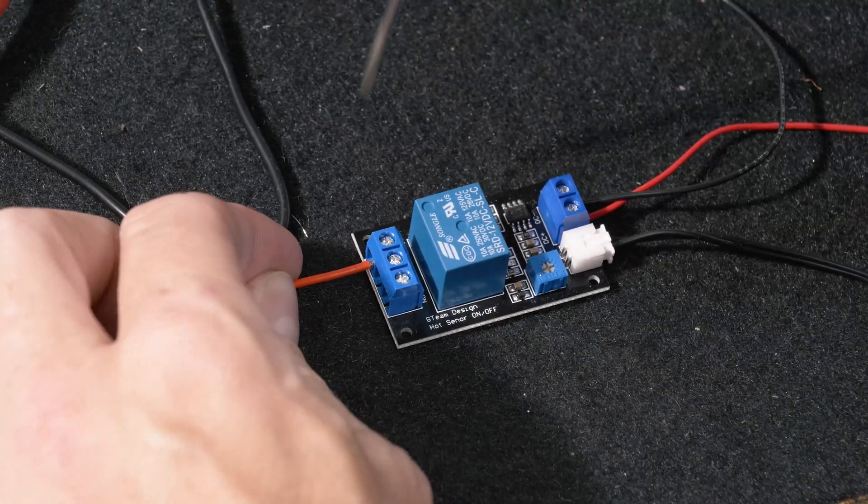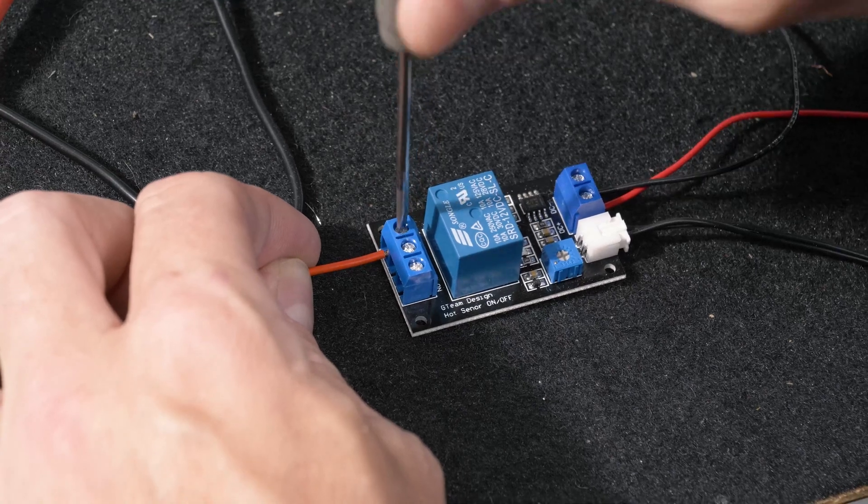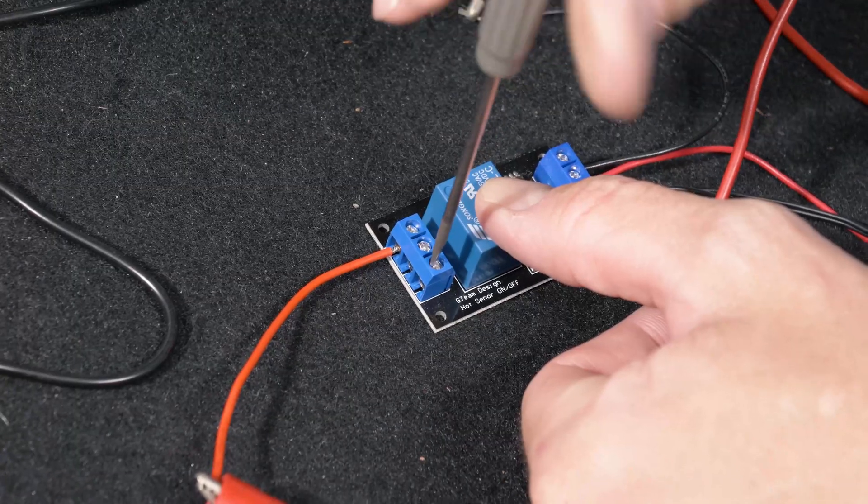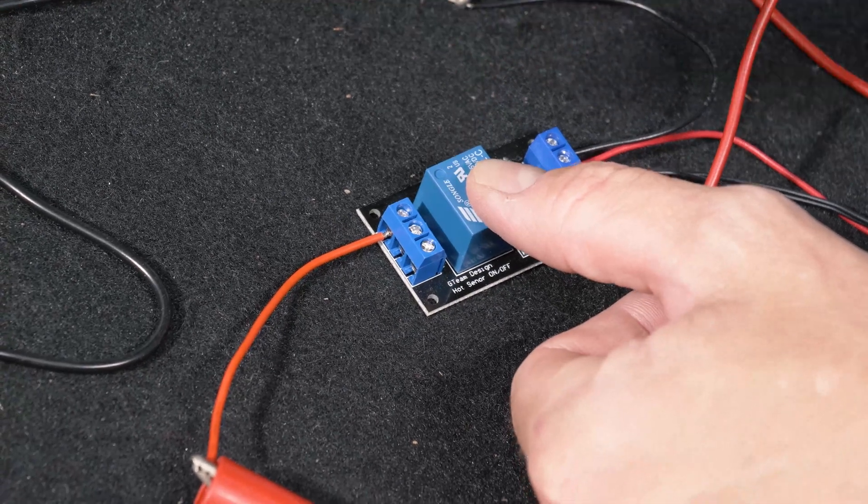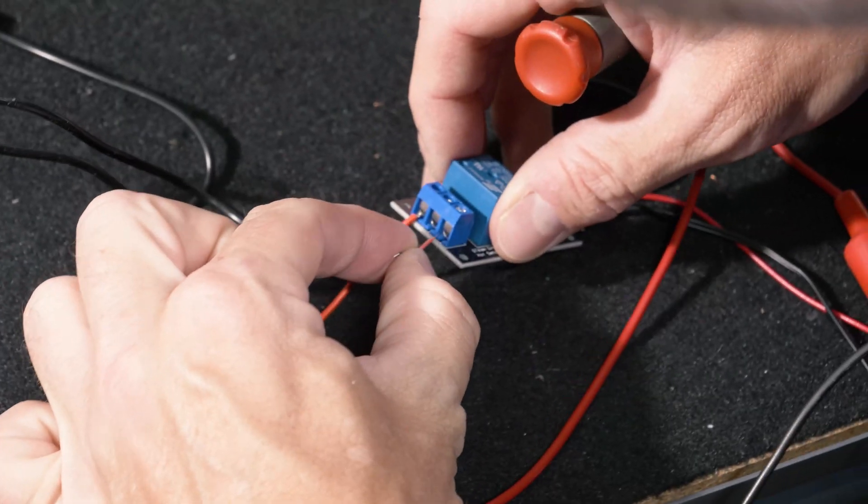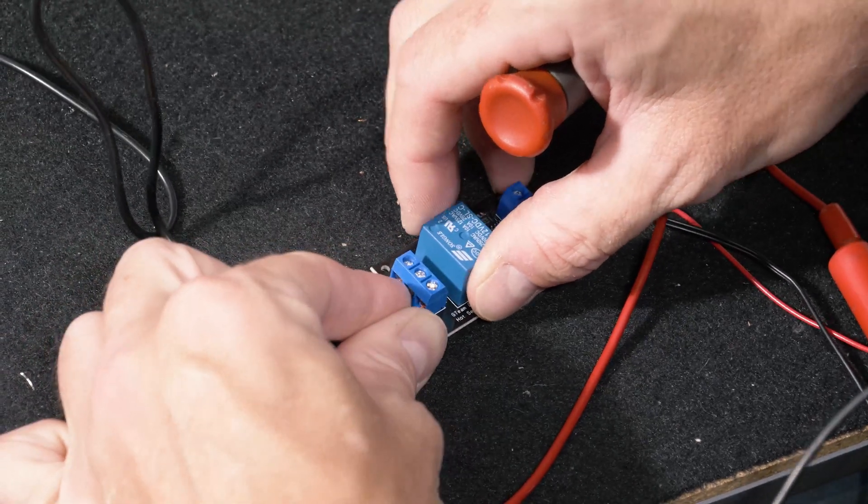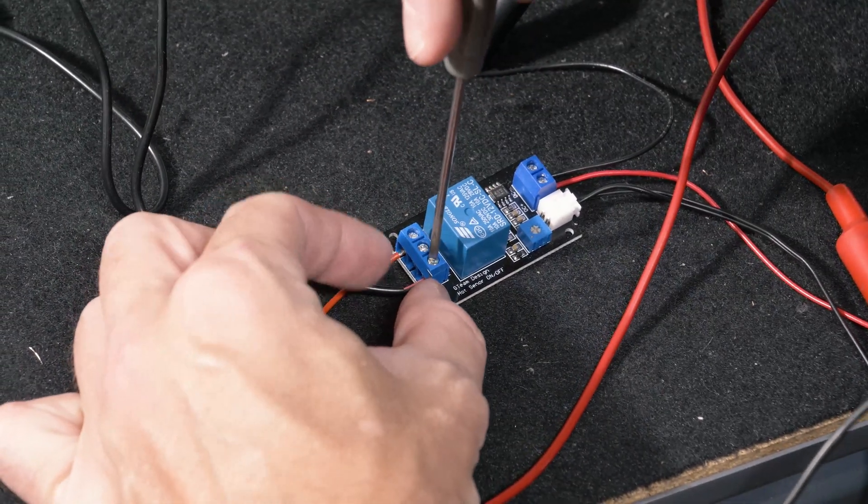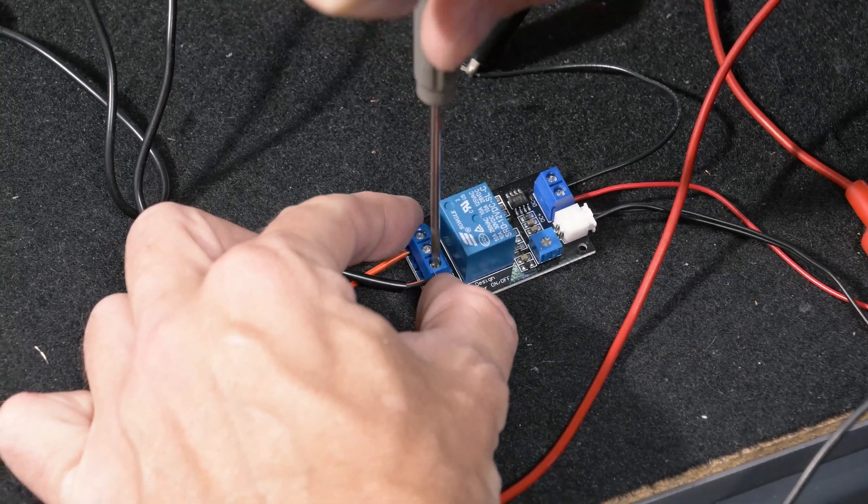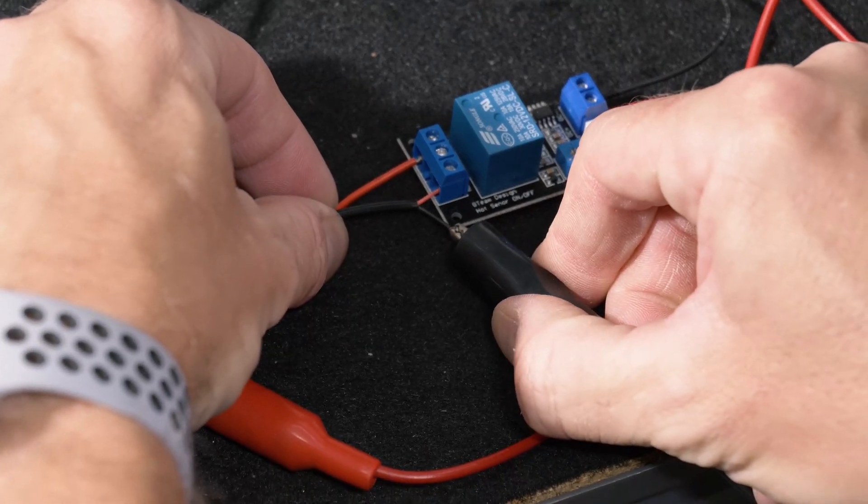We're going to go to our common contact that'll be used for our 12 volt input, and our normally open contact we'll put to the positive side of our LED, and then just ground the other side of our LED.